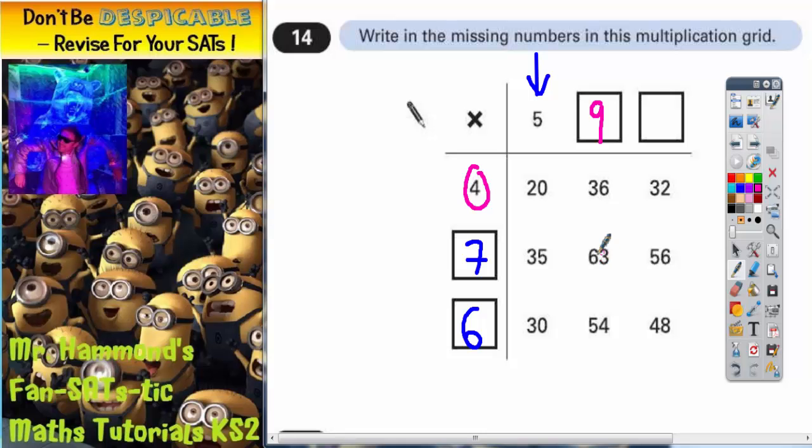we've got. So this 63 here is 7 nines, 63, 7 times 9 is 63, so yeah that fits in